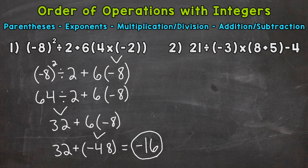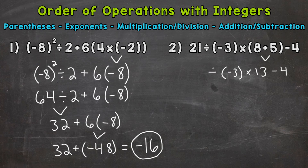Let's move on to number 2, where we have 21 divided by negative 3 times parentheses 8 plus 5 end parentheses minus 4. Let's go through our process. Any parentheses where we have something to solve within those parentheses? Yes — 8 plus 5. So we're going to start there. 8 plus 5 is 13. Bring down everything we did not use, keeping everything in the same exact order.